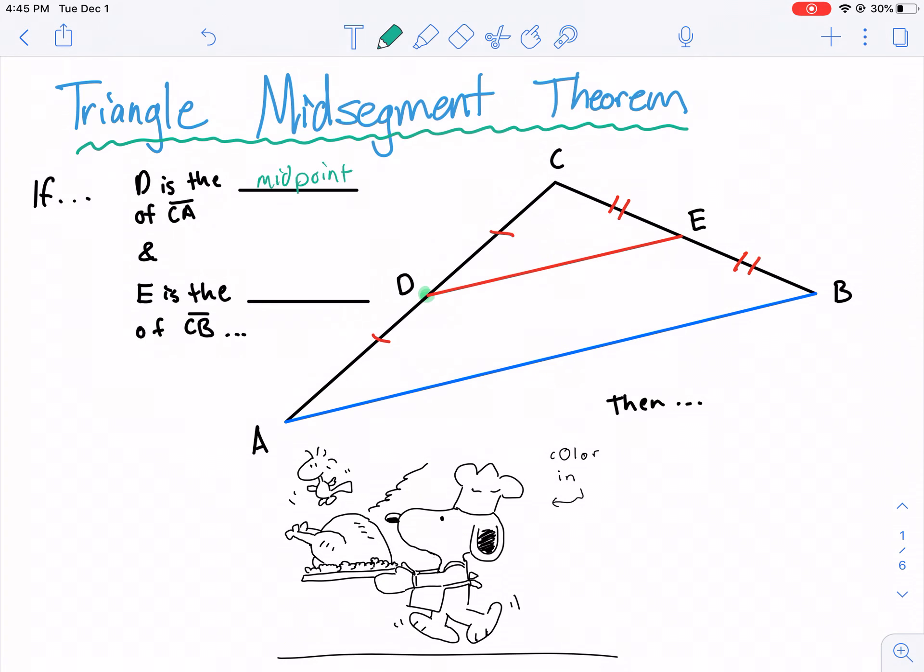Moving on, E is the blank of CB. By the same token, if these two segments are congruent, then that means E is the midpoint there also. So we have another midpoint. Now, this theorem states if both of those are midpoints, then we know the following.